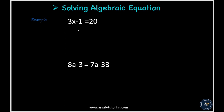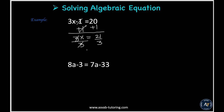The algebraic equation is 3x minus 1 equal to 20. To solve this, you need to do the opposite operation to eliminate a number or variable. You have a minus sign, so add both sides by 1 — the ones cancel out. Now you have 3x equal to 21, then divide both sides by 3, and you get x equal to 7.